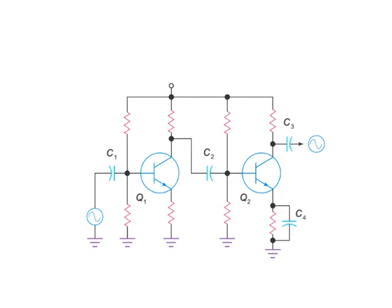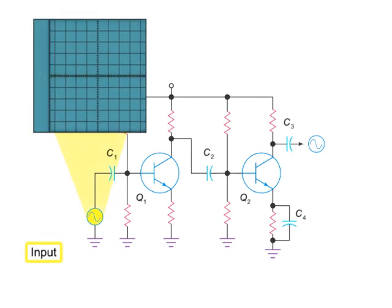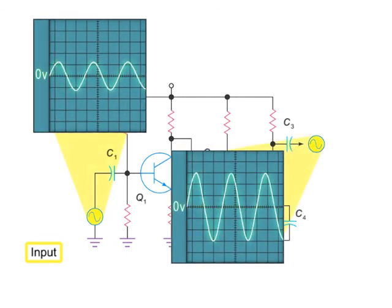This circuit represents a two-stage capacitively coupled amplifier. This amplifier successfully increases the size of an AC input signal without inverting its phase or adding any DC voltage at the output.